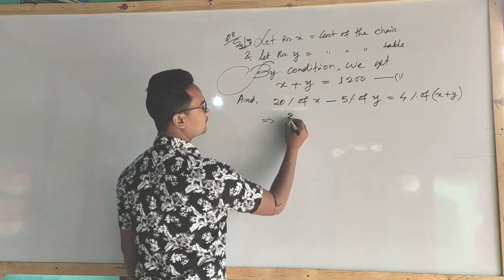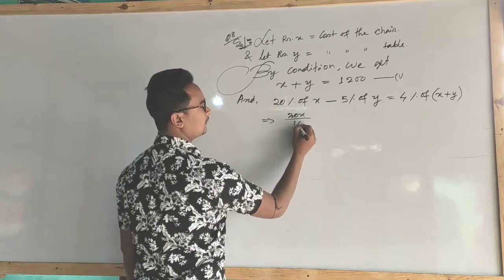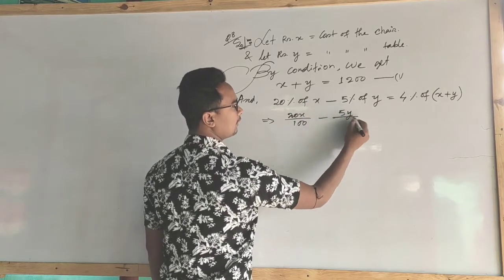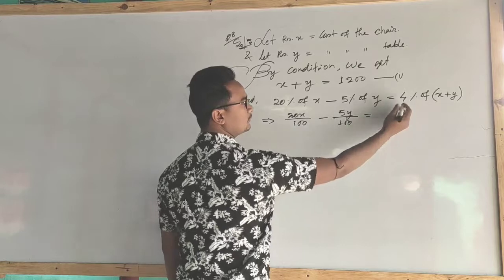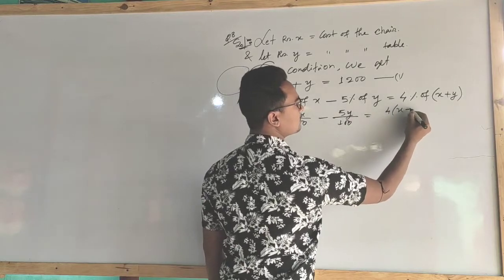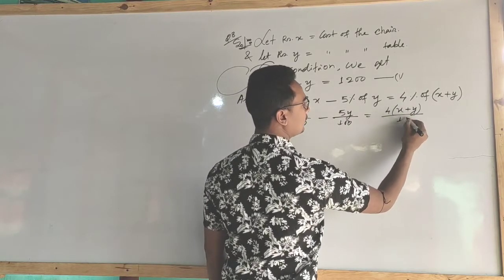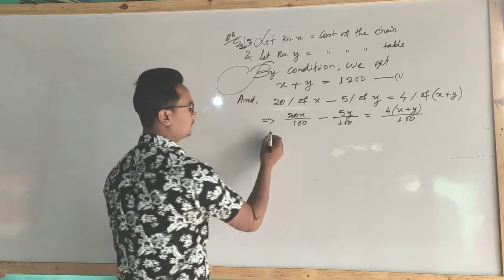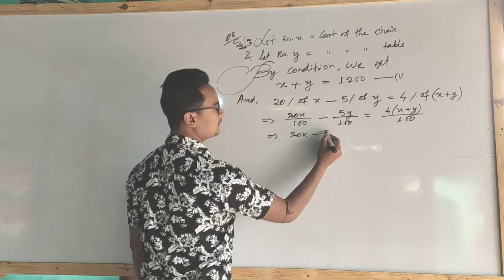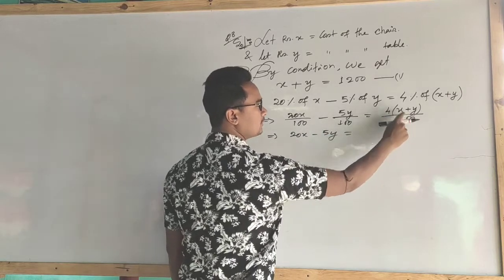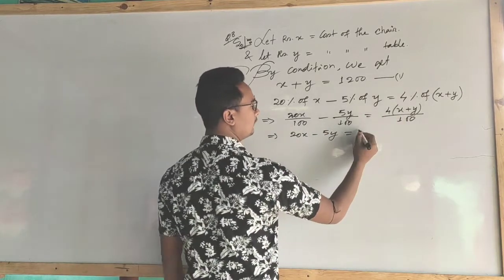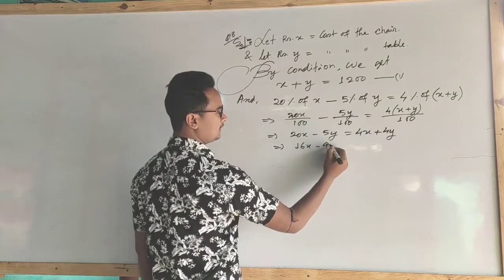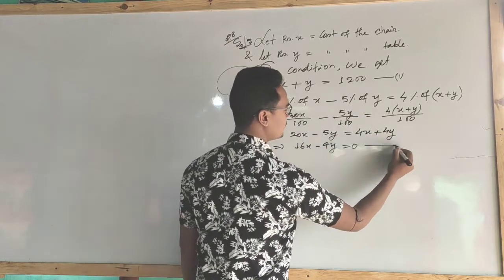So 20x by 100 minus 5y upon 100 is equal to 4(x plus y) by 100. Multiplying both sides by 100: 20x minus 5y equals 4x plus 4y. Then rearranging: 16x minus 9y equals 0. This is equation number 2.